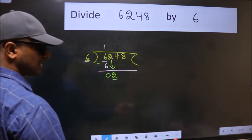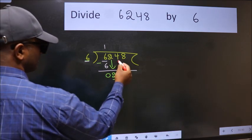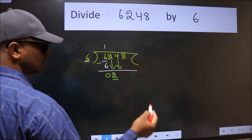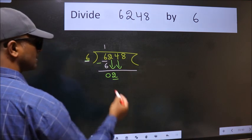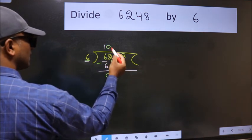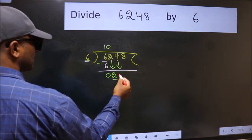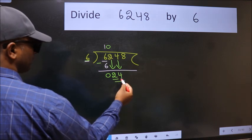So, we should bring down the second number. And the rule to bring down the second number is put 0 here. Then only we can bring this number down. So, 24.